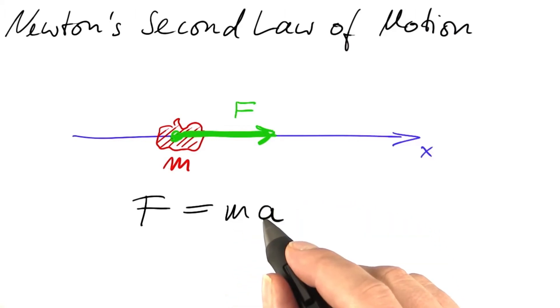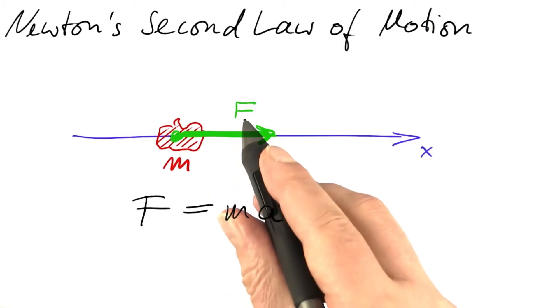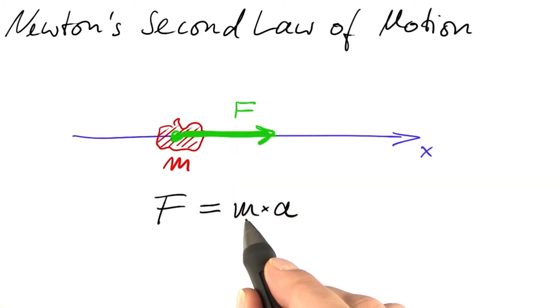The mass times the acceleration is that force. If we keep the same object, the same mass, and double the force, we double the acceleration, the change of velocity.